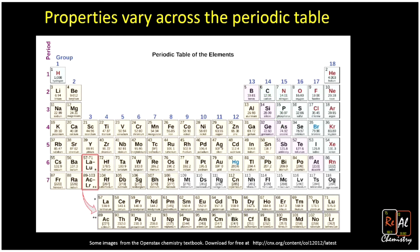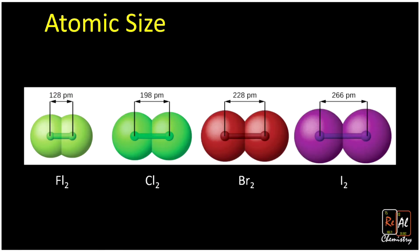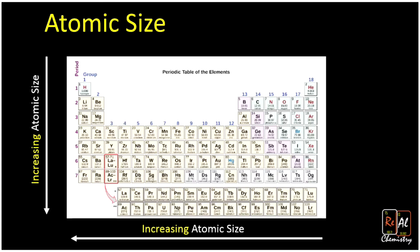Another property we'll talk about is atomic size. Let's look at fluorine, chlorine, bromine, and iodine and think about how big they are. If we draw out their sizes, F₂ is 128 picometers from nuclei to nuclei, chlorine is 200 picometers, bromine is 228, and iodine is 266. These atoms get bigger and bigger as we go down the periodic table — that's the trend of atomic size.